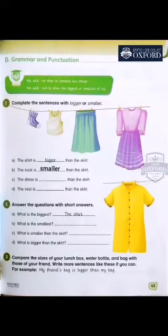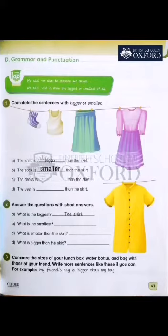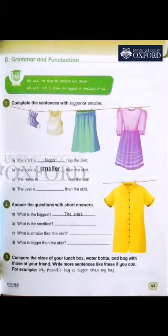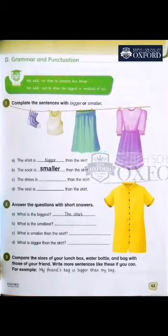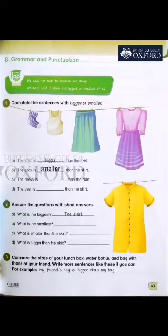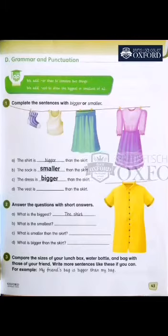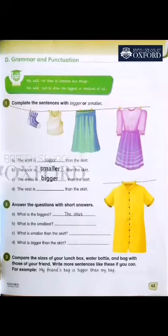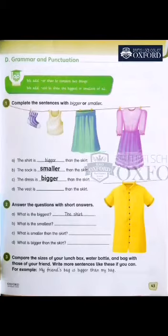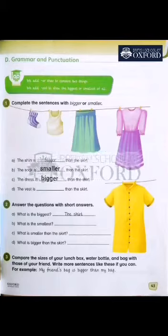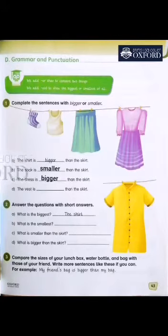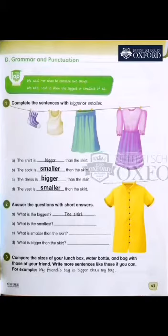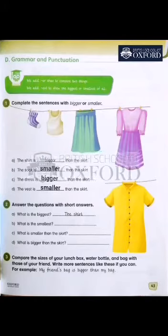Now C: 'The dress is dash than the skirt.' We compare the dress and skirt. The dress is big, and we compare two things, so we add ER. Excellent. Now the last one: 'The waist is dash than the skirt.' The waist is small, and we compare two things, so what do we add? ER. So the answer is: smaller. Very good, excellent.